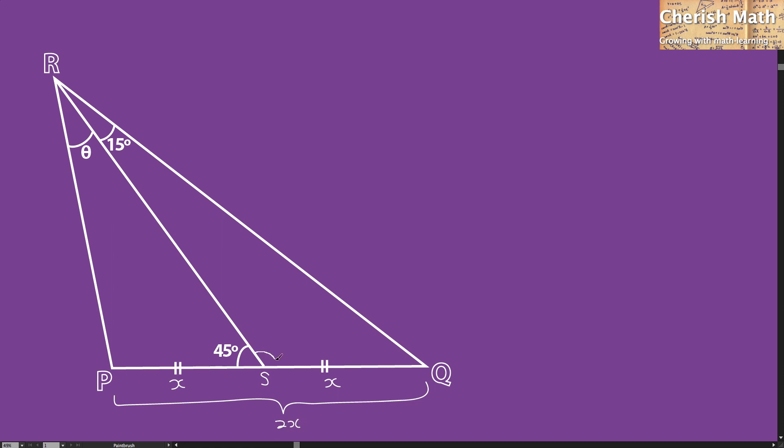For this angle, I'm going to get 135 degrees by using 180 degrees minus 45 degrees. For this part, I'm going to use supplementary angles to solve the problem. That would be 180 degrees minus 135 degrees minus 15 degrees. The answer I'm getting here is 30 degrees.